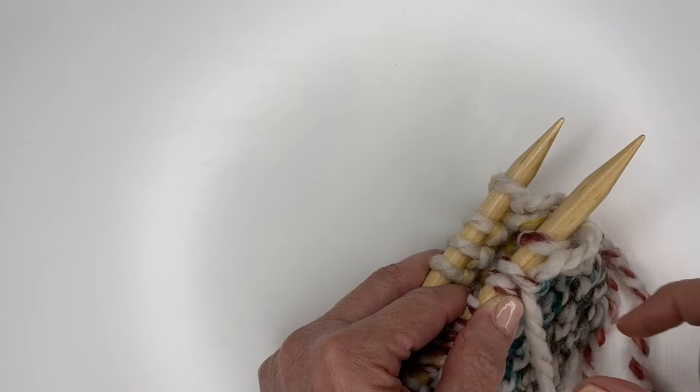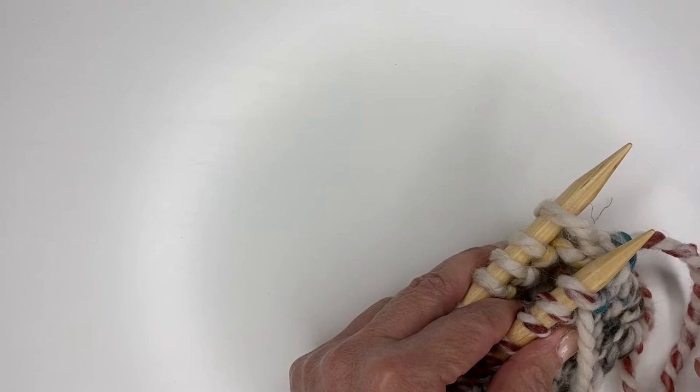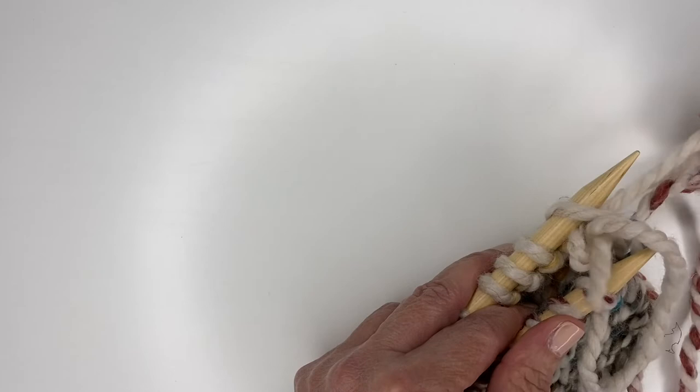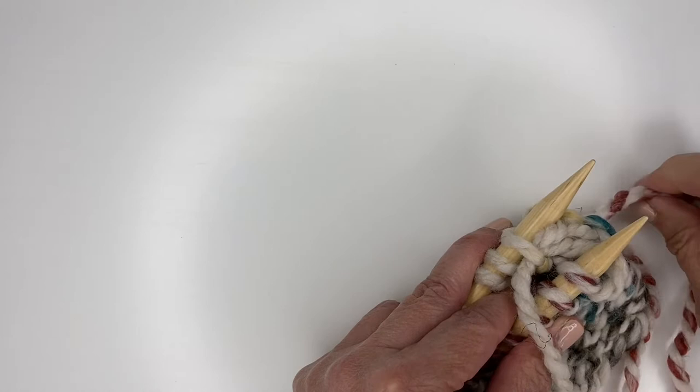You're going to try to get the tension the same as your working pieces. Then on the back piece, on the back needle, you will do the same thing: knit off, always making sure your yarn goes behind, and purl on. That's what you keep doing right across.